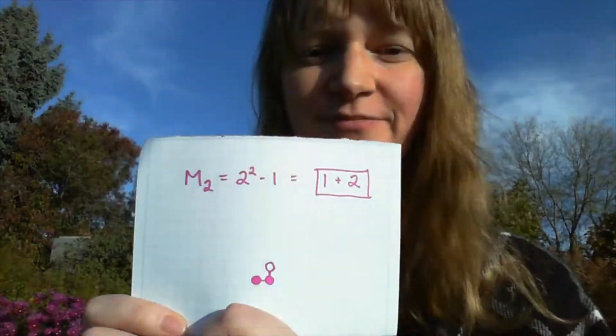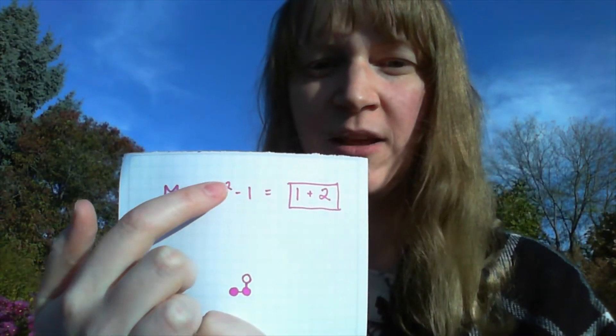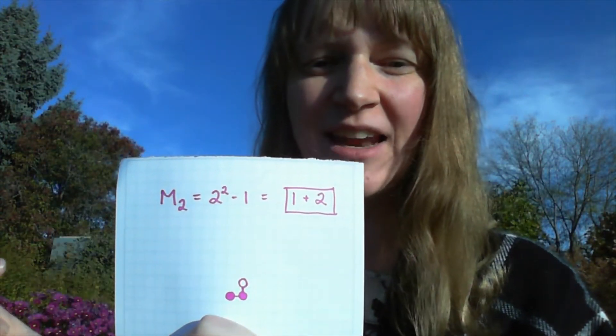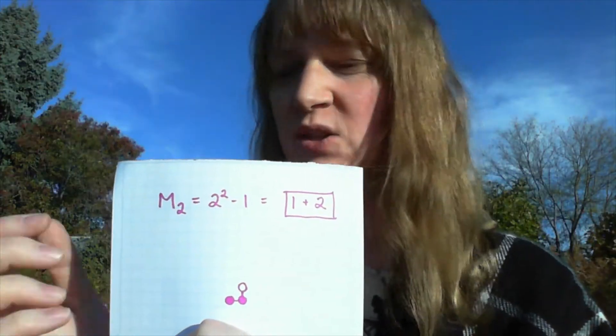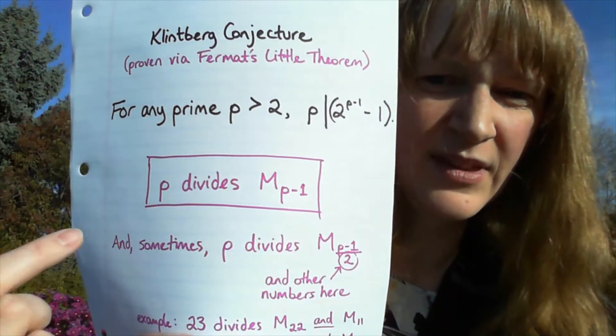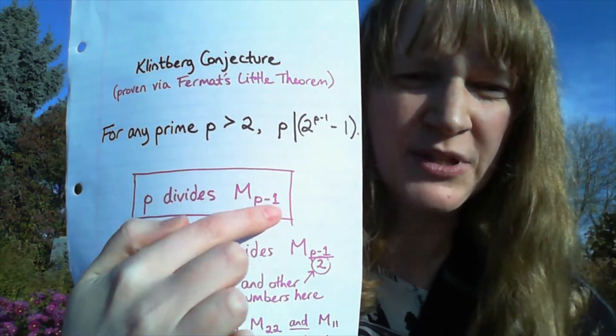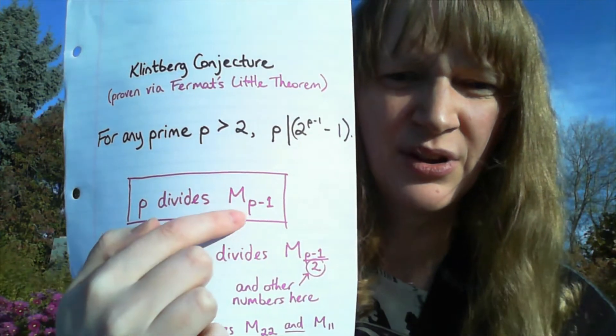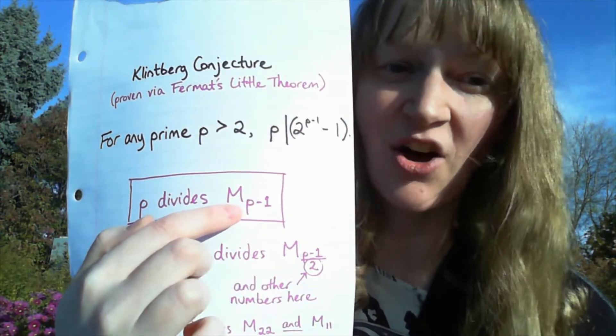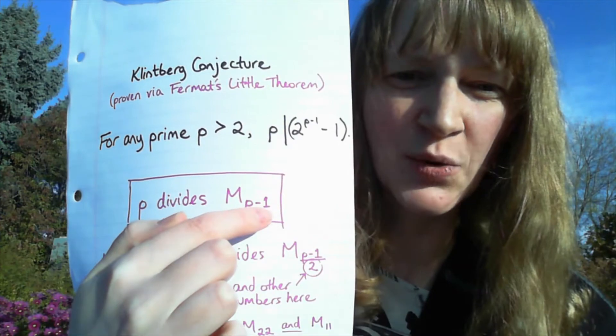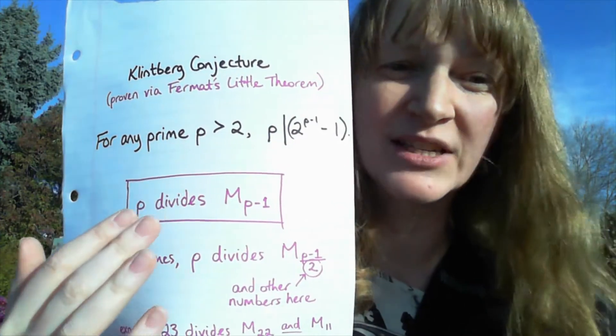Now the Mersenne numbers that we're going to look at, the composite ones, are going to be the ones with even exponents. Let's only look at Mersenne numbers with even exponents because we know from what we're building that p divides these types of composite Mersenne numbers, where p is obviously going to be odd and so the exponent we're looking at in the Mersenne number is going to be even.